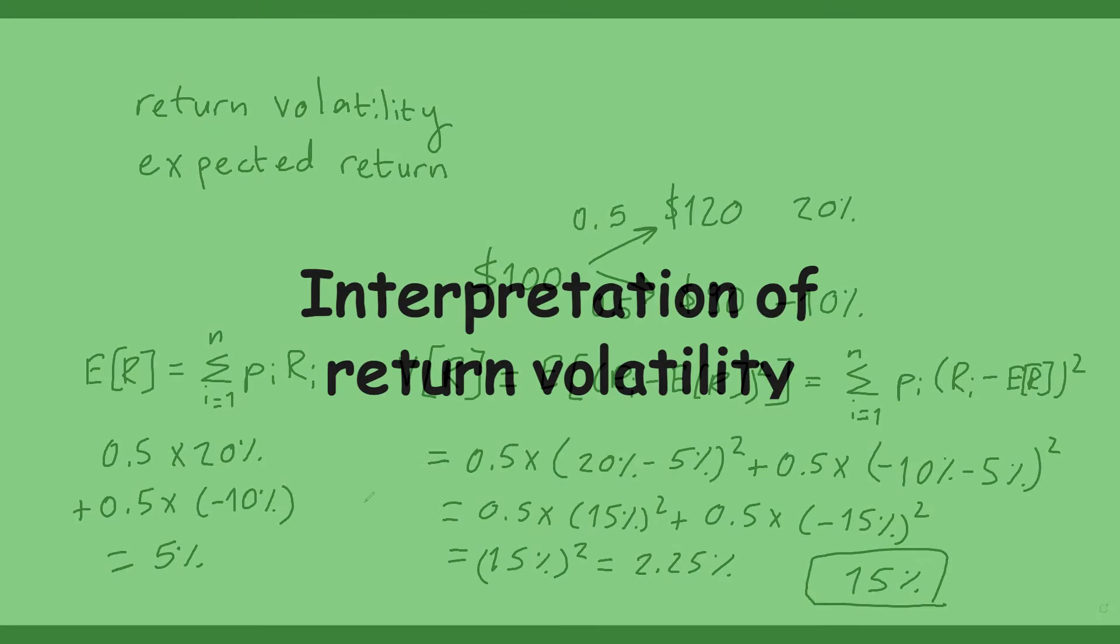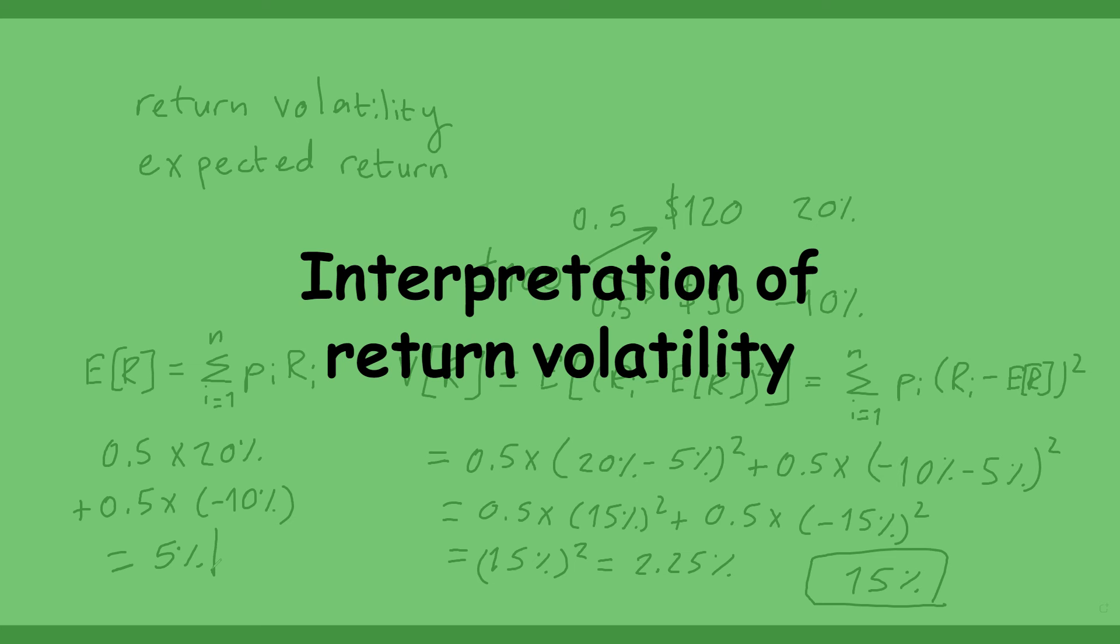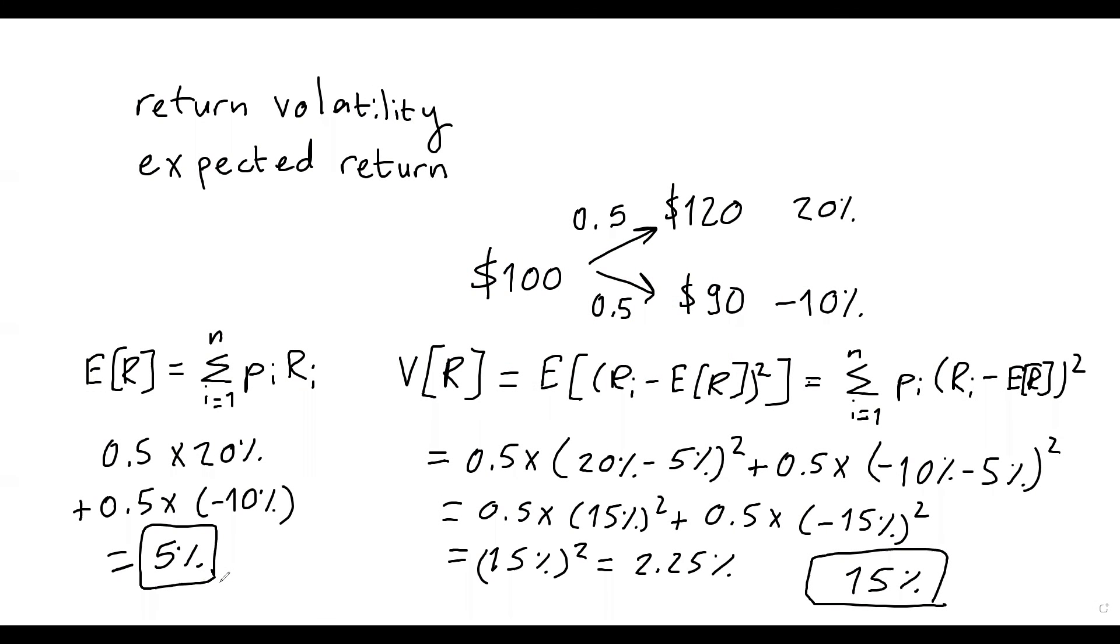So now I have a more complete assessment of this investment opportunity. So the expected return of this stock is 5% with a return volatility of 15%. Now it's easier to compare the stock with other similar stocks. For example, if I come across another stock which gives 5% return, but with a lot higher volatility compared to 15%, then clearly this stock could be preferable to that one. For the same level of return, this would be less risky.